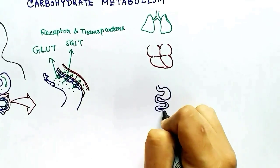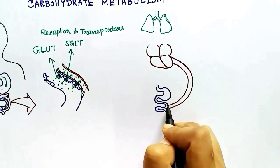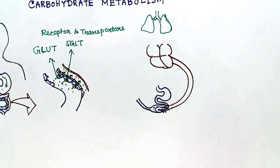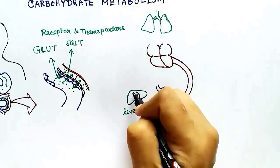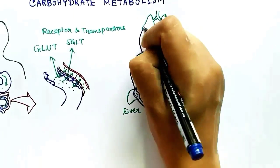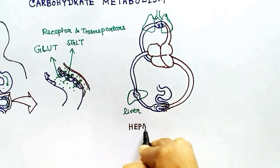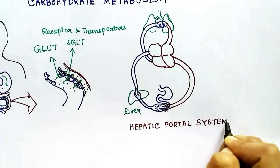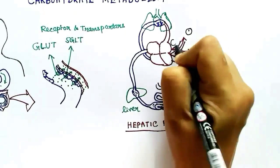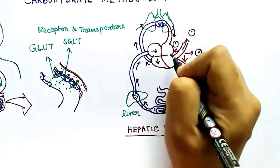The absorbed nutrients are not directly sent to the heart. They go through the hepatic portal system, where blood carrying nutrients from the digestive system goes to the liver first. The liver decides how much nutrients need to be sent to the body. After liver processing, blood goes to the heart, gets oxygenated through the lungs, and is then sent to all cells of the body.